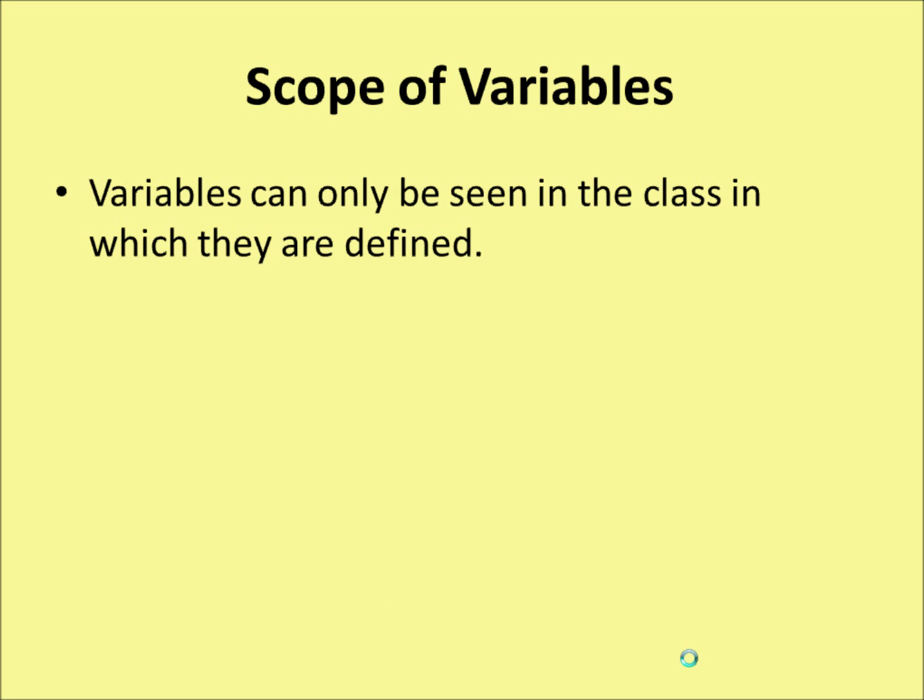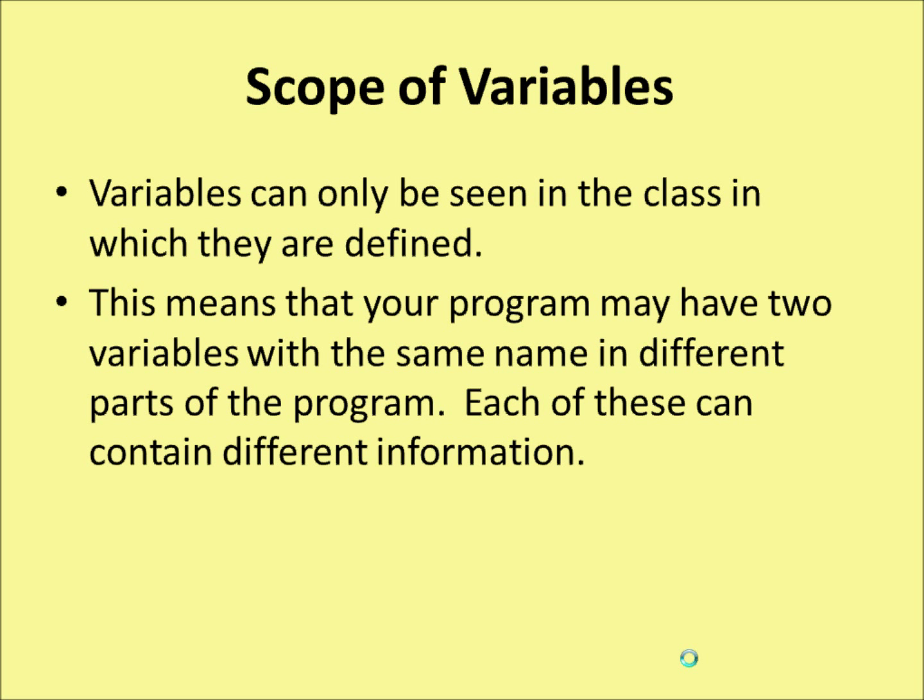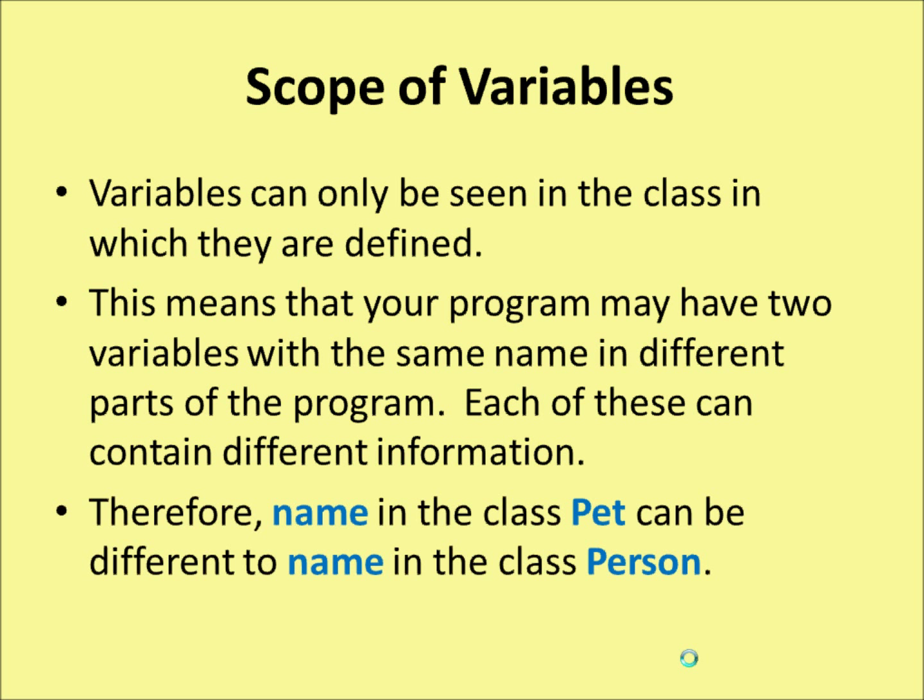Scope of variables — this is something that can be a bit confusing at first. Variables can only be seen in the class in which they're defined. This means that your program may have two variables with the same name in different parts of the program, and each of these can contain different information. For example, you could have 'name' in the class Pet and that would be different to 'name' in the class Person — so your name and the name of your pet would be different. That makes sense.